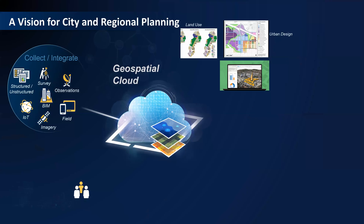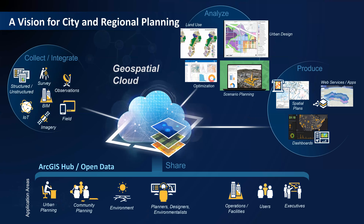This brings us to what ArcGIS envisions when looking at planning — both city and regional planning. The geospatial cloud is tied to various components: collect, integrate, analyze, produce, and share. As planners, we use a lot of data in different formats — basic structured and unstructured tabular data which may or may not have a geospatial component, data from architects and engineers, and shapefiles stored in folders and disks — and all this forms the basis of what we collect and integrate into the geospatial system.